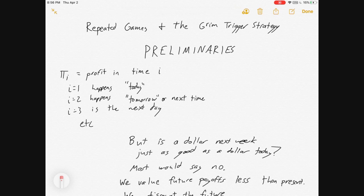So let's lay out some preliminaries. We've got πi is profit in time i. So if i equals 1, that's what happens today. i equals 2 is what happens tomorrow, and so on.